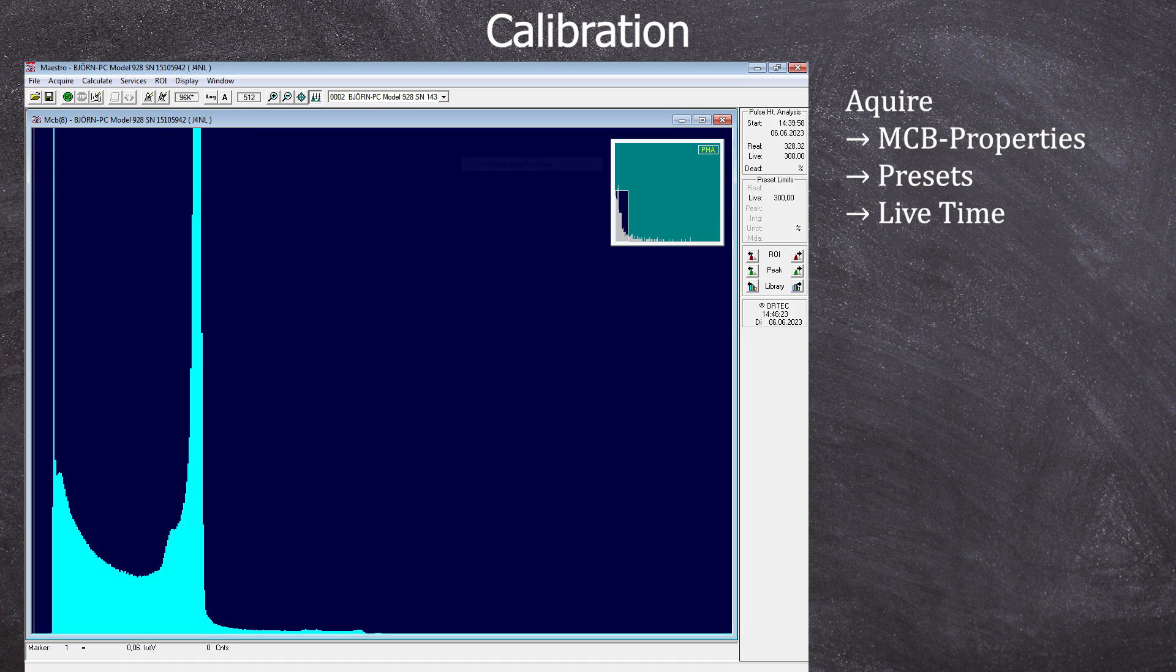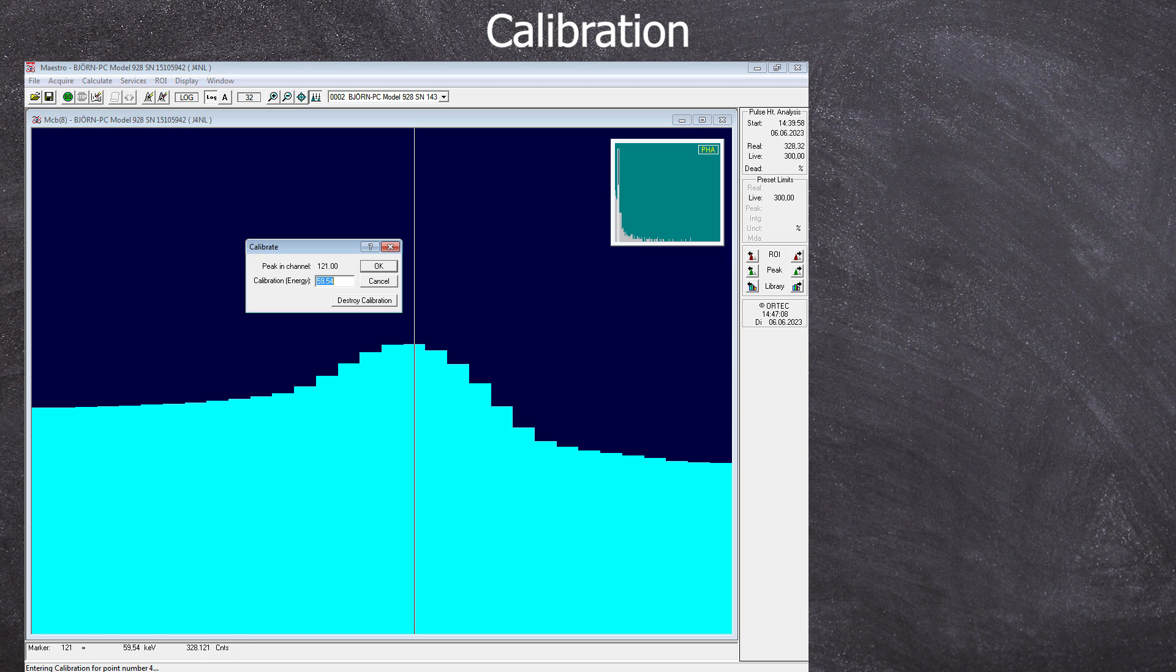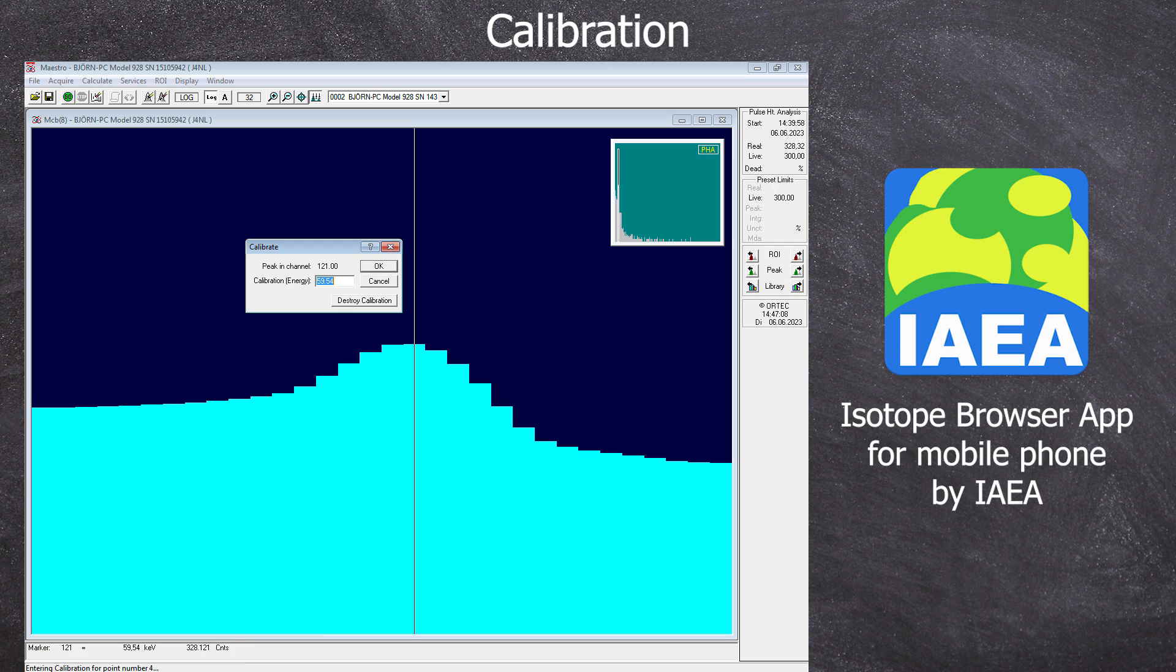We can clearly see a peak and now we need to assign a gamma energy to it. To do this, zoom in with the arrow keys until you have the exact channel with the most counts. In this case, it's channel 121. Use Calculate and Calibrate to assign the gamma energy listed in the Isotope browser app for Americium-241, which is 59.54 keV.